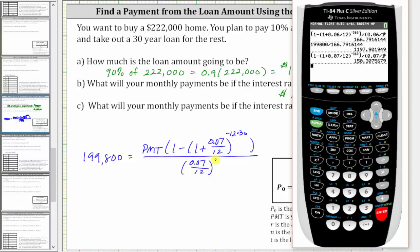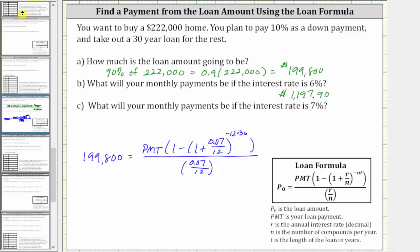And now this quotient is approximately 150.3075679, and therefore the right side of the equation can be written as PMT times this value here. Let's go ahead and do that. When the interest rate is seven percent, we have the equation 199,800 equals PMT times 150.3075679.